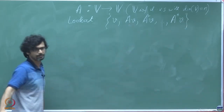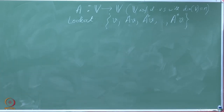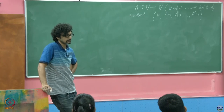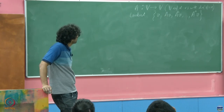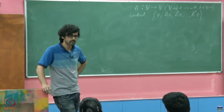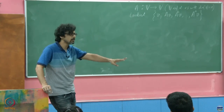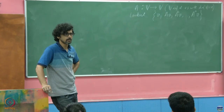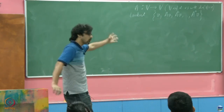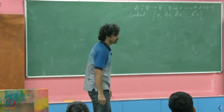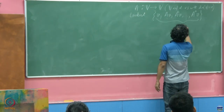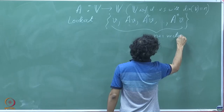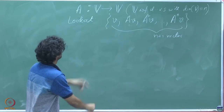Let us look at V, AV, A²V, and so on. By the way, V is a finite dimensional vector space with dimension n. We will take a look at this all the way until A^n V. This is a set of vectors — how many vectors are there? There are n+1 vectors. What can you say about this set of vectors? A very fundamental concept of linear algebra: they cannot be linearly independent because the dimension is n and the cardinality of this set is n+1 vectors.